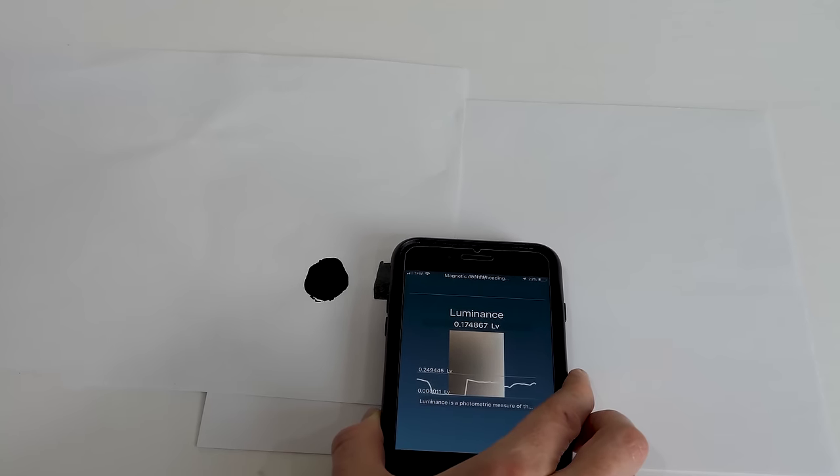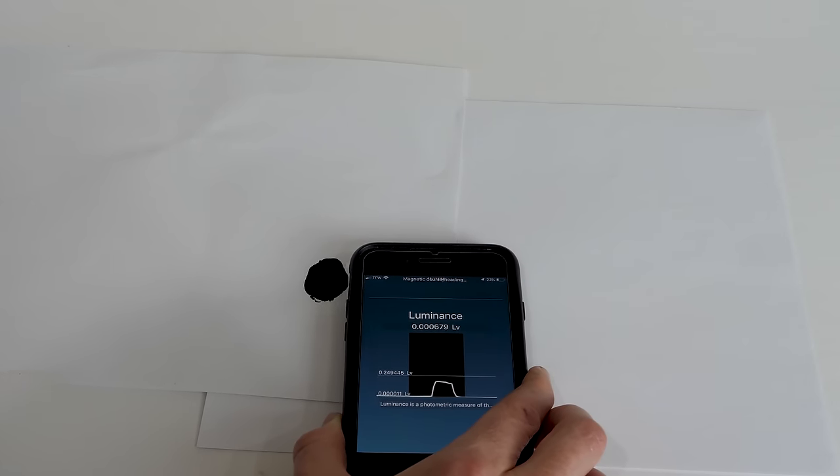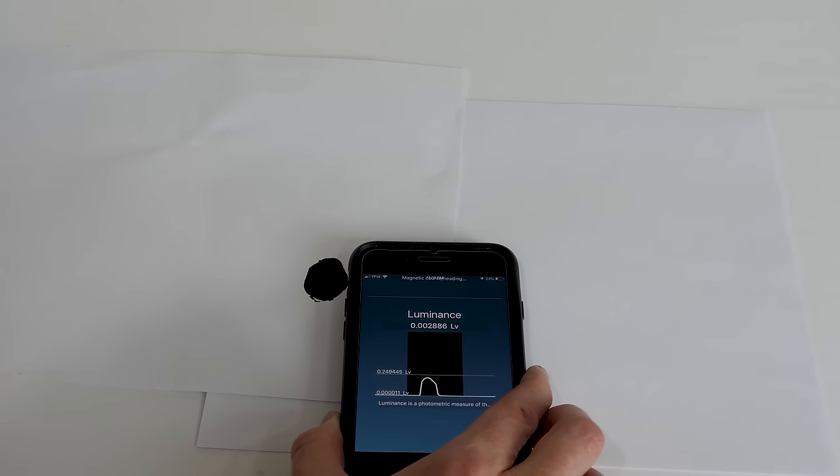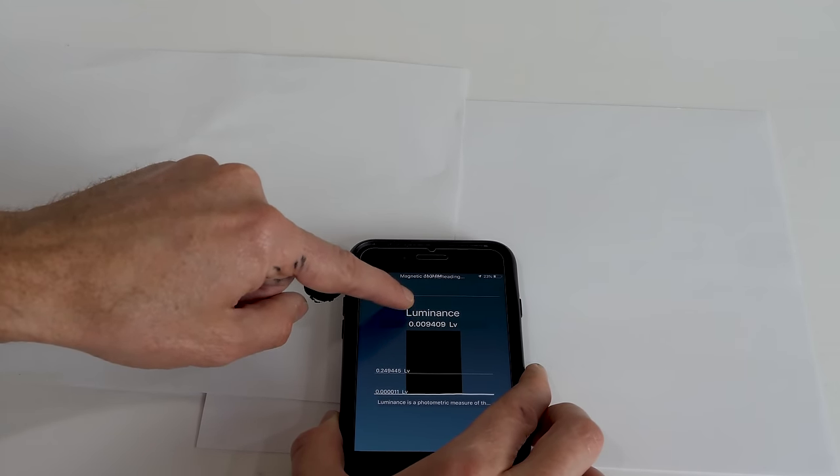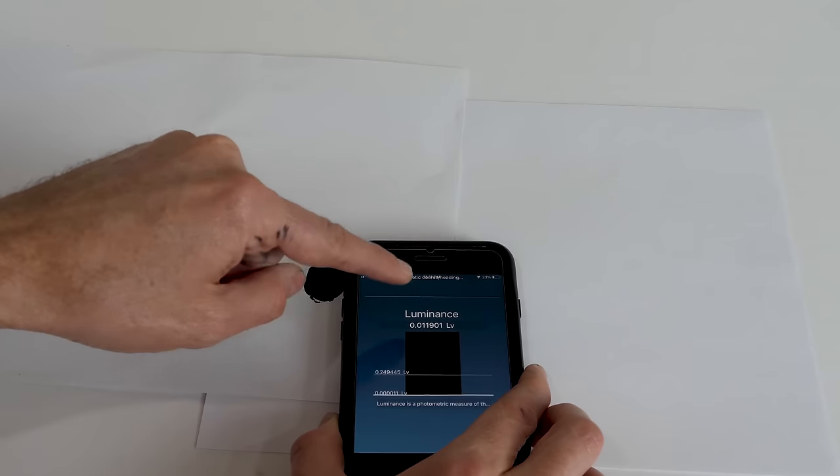So on the white here, we're getting around 0.1 to 0.15 luminance. It drops to around 0.0007 is the lowest. It goes up a little bit after that, but that's because the camera turns up its ISO. So what you really have to look at is as soon as I go over the black, what it changes to.